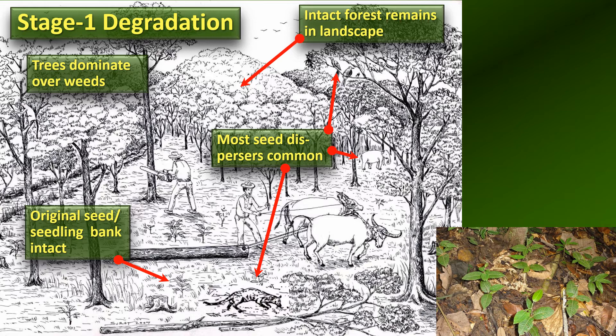Let's start with stage one degradation — selective logging. If you go into a selectively logged area, in most cases these areas have everything they need to undergo natural regeneration. There are plenty of seedlings growing on the forest floor, there are seed sources nearby from unlogged areas, and there are animals like birds, maybe even elephants and civets, present to move seeds from remnant fragments of forest into the restoration site.